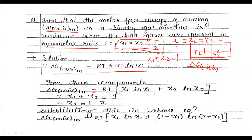Since X1 plus X2 equals 1, we have X2 equals 1 minus X1. Substituting, the molar free energy of mixing becomes RT times [X1 ln X1 plus (1 minus X1) ln(1 minus X1)]. To find the minimum, we differentiate this expression with respect to X1 and set it equal to zero.